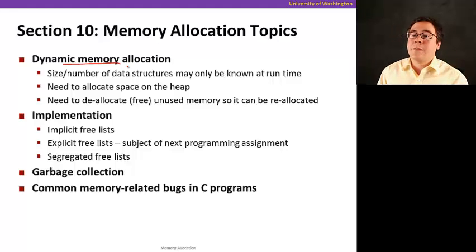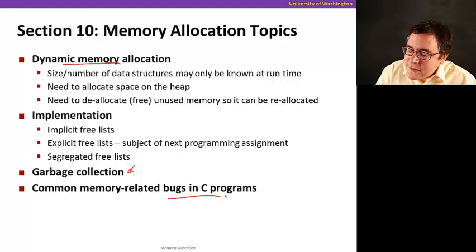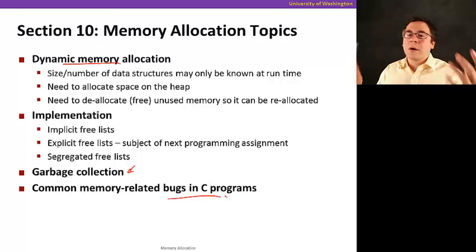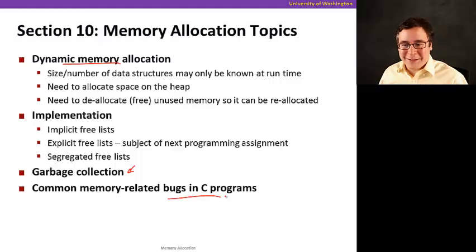The reason we need dynamic memory allocation is because the size and number of data structures may only be known at run time dynamically. Then we're going to see how we implement dynamic memory allocation in a number of ways. We're going to look at something called garbage collection, which automates a lot of the memory management process from the programmer's point of view. And then we're going to see how memory related bugs really can make your life hard and what are some of the common memory related bugs in C that happen so you can avoid them in your code.